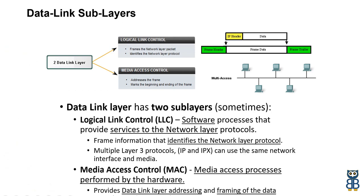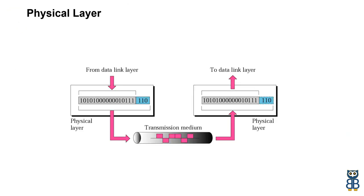Physical addressing is an address which is pre-programmed into the hardware. Every network card has a MAC address which is burnt into the network card, and this special address is used to uniquely identify your computer from all others on the network. Let's move to the physical layer. The physical layer is responsible for the movement of individual bits from one hop to the next hop, or one node to the next node.